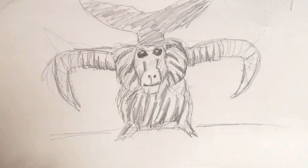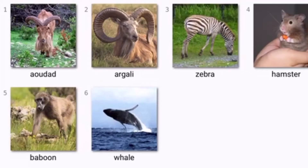So for this one, you can see it has those Argali horns, a whale tail, baboon face, guinea pig eyes and body, and zebra stripes. Moving on to the next one now.